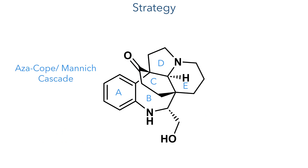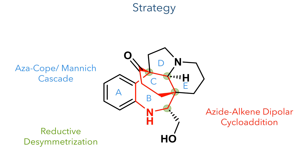To construct this core, they would use an aza-Cope/Mannich reaction cascade, while the stereochemistry could be introduced using a reductive desymmetrisation. Finally, an azide-alkene dipolar cycloaddition could be used to complete the azabicyclodecane core. So let's dive into the synthesis.